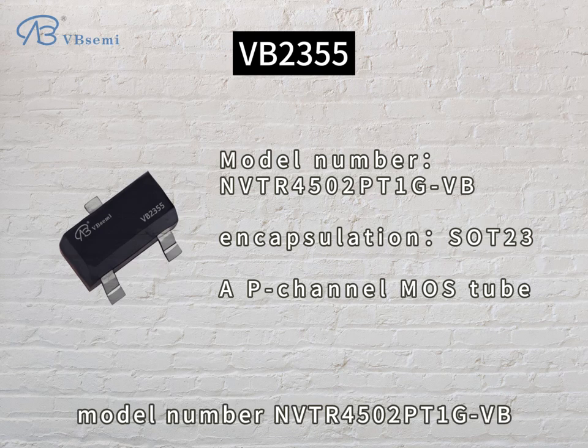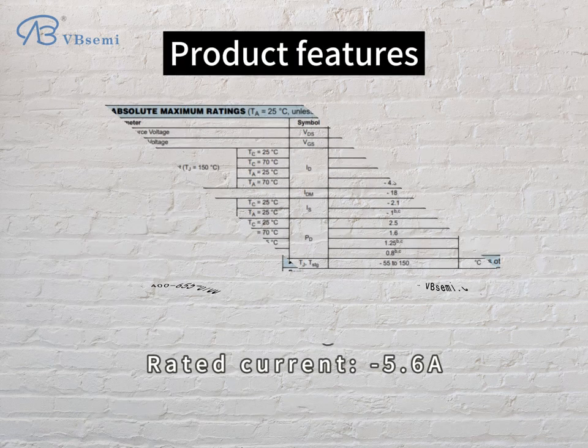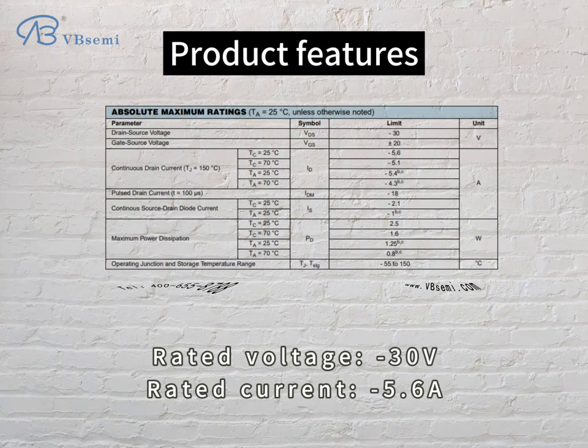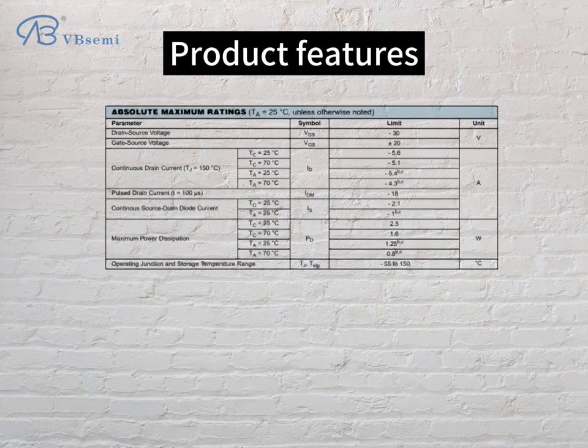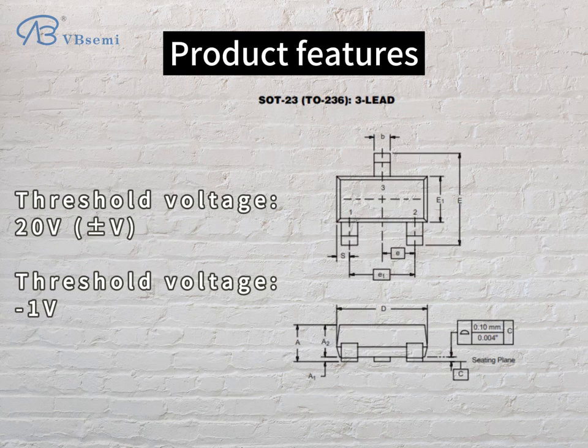Model number: NVTR4502PTE-GVB. Product features: Rated Voltage -30V, Rated Current -5.6A, Threshold Voltage -20V to -1V.